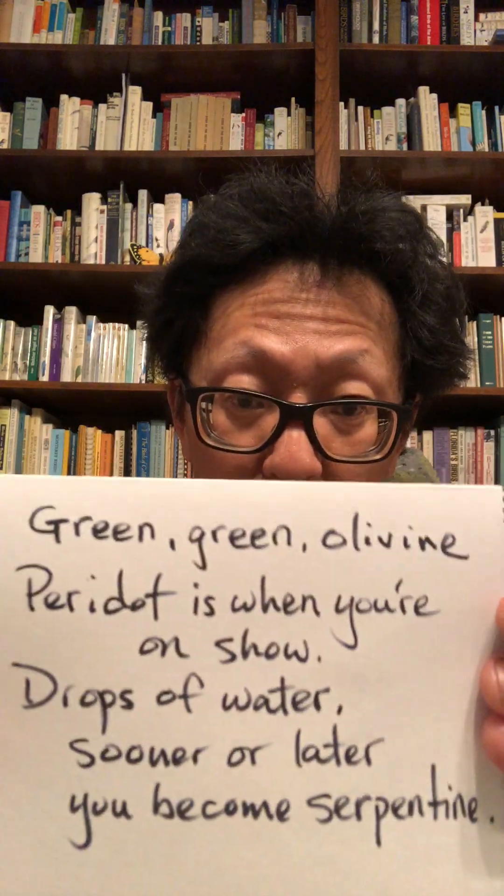To help you remember some of these, I wrote a poem long ago called 'Green Green Olivine.' Peridot is when you're on show. Drops of water sooner or later, you become serpentine.